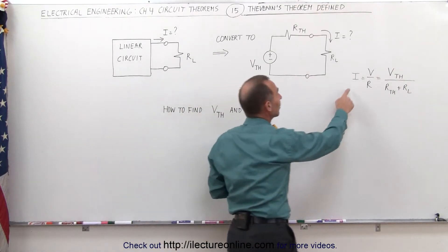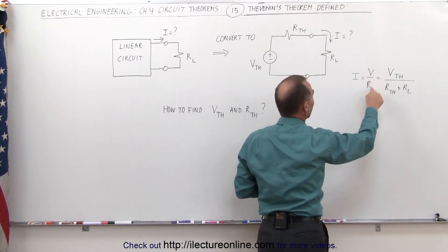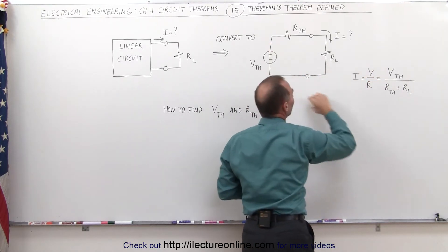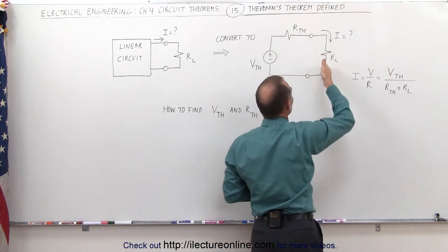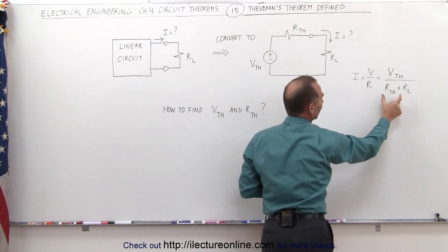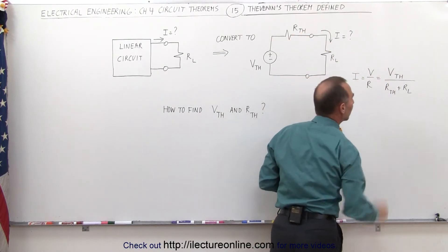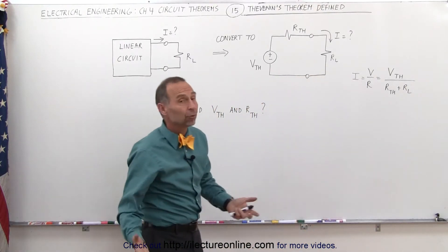Using Ohm's law, we can say that the current is equal to the voltage divided by the resistance. The voltage is the Thevenin's voltage, and the resistance will be the total resistance of the circuit, which is the sum of the Thevenin's resistance plus the load resistor. Becomes really easy.